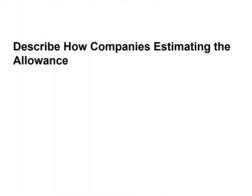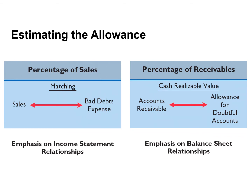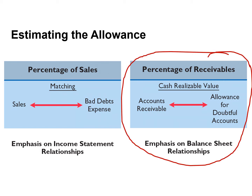This video will discuss how we estimate the allowance or bad debt expense using the percentage of receivables method. The amount of the allowance or bad debt expense is often estimated based on either percentage of credit sales or percentage of receivables. In this video, we will focus on the percentage of receivables.